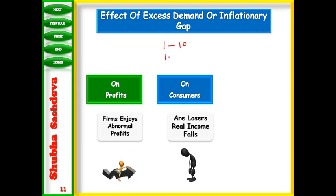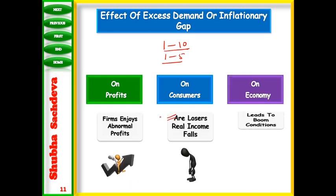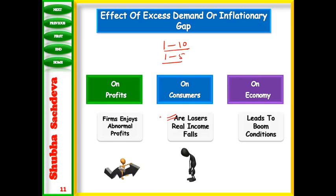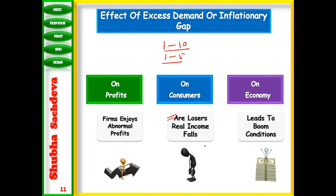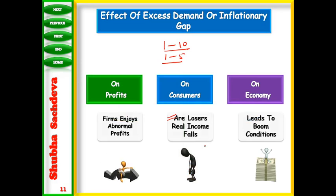Consumers are the losers because prices are increasing — their real income falls. On the economy, it leads to boom conditions: prices are high, nominal incomes rise as employed people earn more, employees demand higher salaries, money supply increases, and savings increase. This cycle sustains boom conditions. The problem of deficient demand will be discussed in the next video. Please go through this topic, and if you have any problem you can ask me anytime. Thank you, God bless you all.